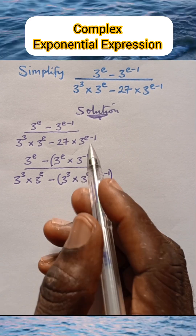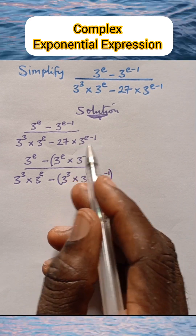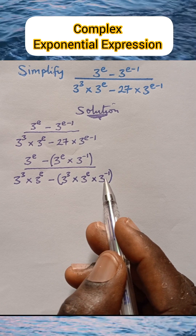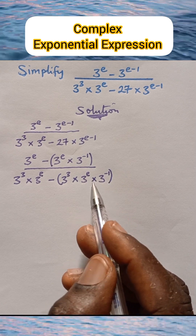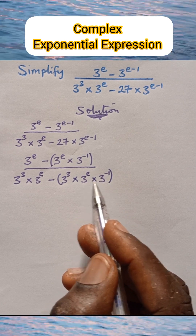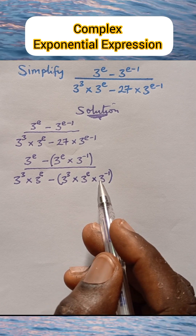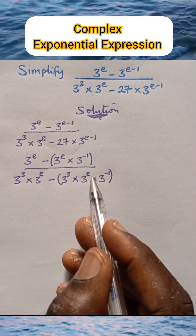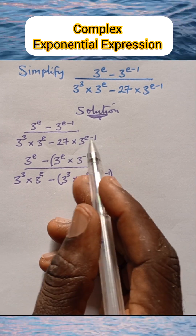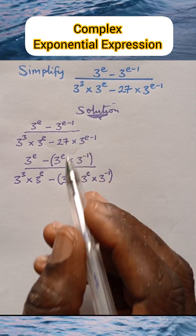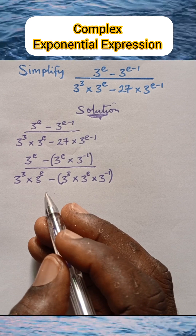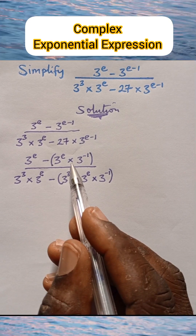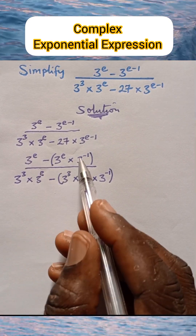Similarly, we expanded this term. According to the multiplication law of indices, since both have the same base we can use one to represent them and add their exponents, and when you do that you get back what you have here. Now let's continue — look at this numerator, there is something common to both sides, and that is 3 raised to power e.